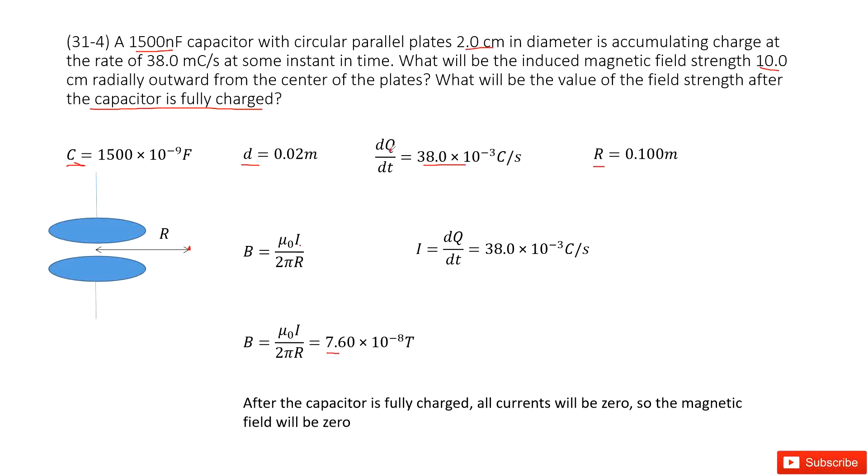So the charge rate, dq over dt, is 0. dq over dt is 0, that means the current is 0. The current will be 0, so the magnetic field will be 0.